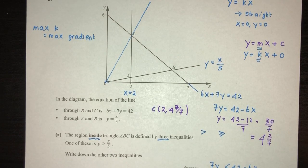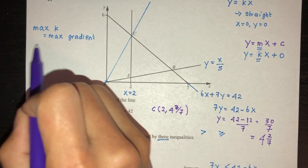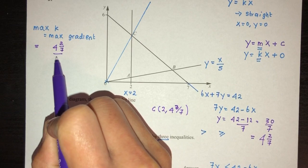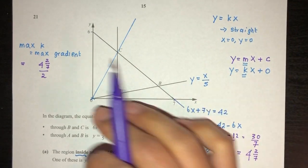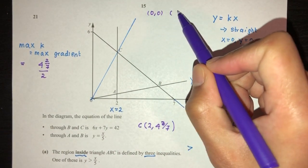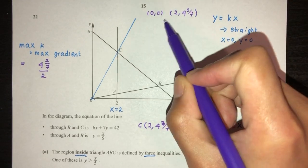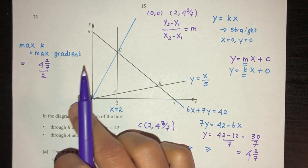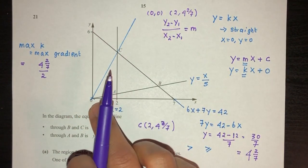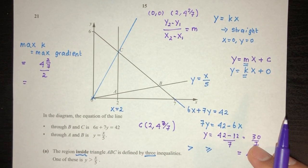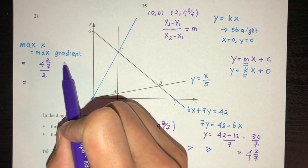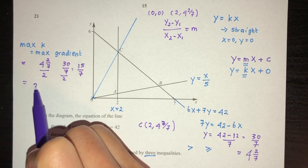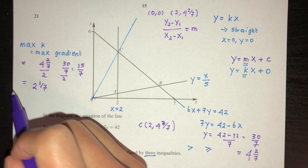To find the maximum gradient of line OC, we take height divided by base — that is (30/7) divided by 2, which equals 15 over 7, approximately 2 and 1/7. You can also use the gradient formula with points O(0,0) and C(2, 4 and 2/7): (y2 minus y1) over (x2 minus x1). So the maximum value of k is 15/7, which is about 2.14.